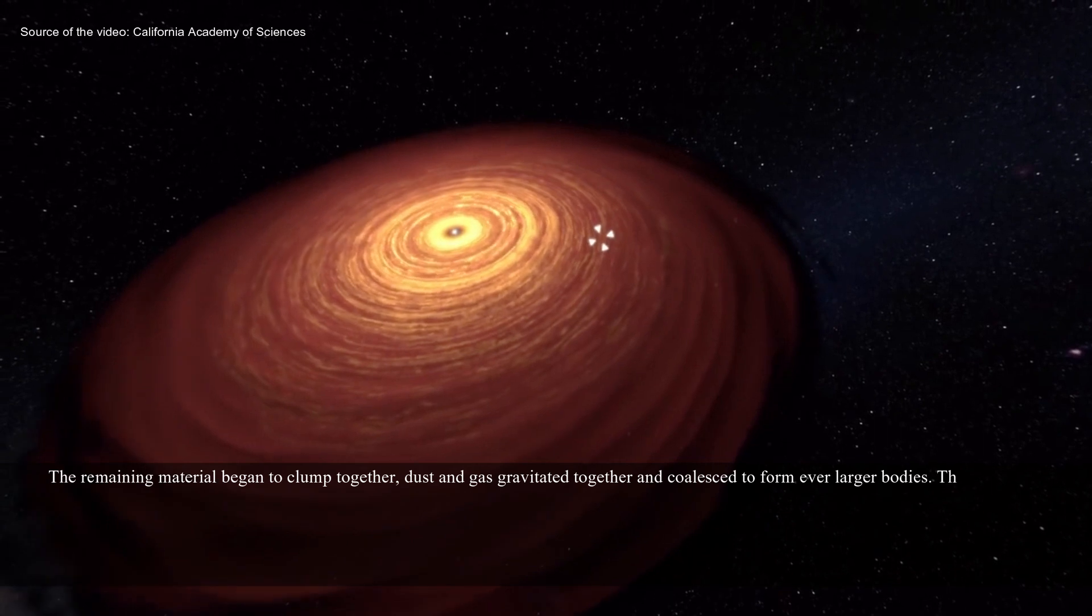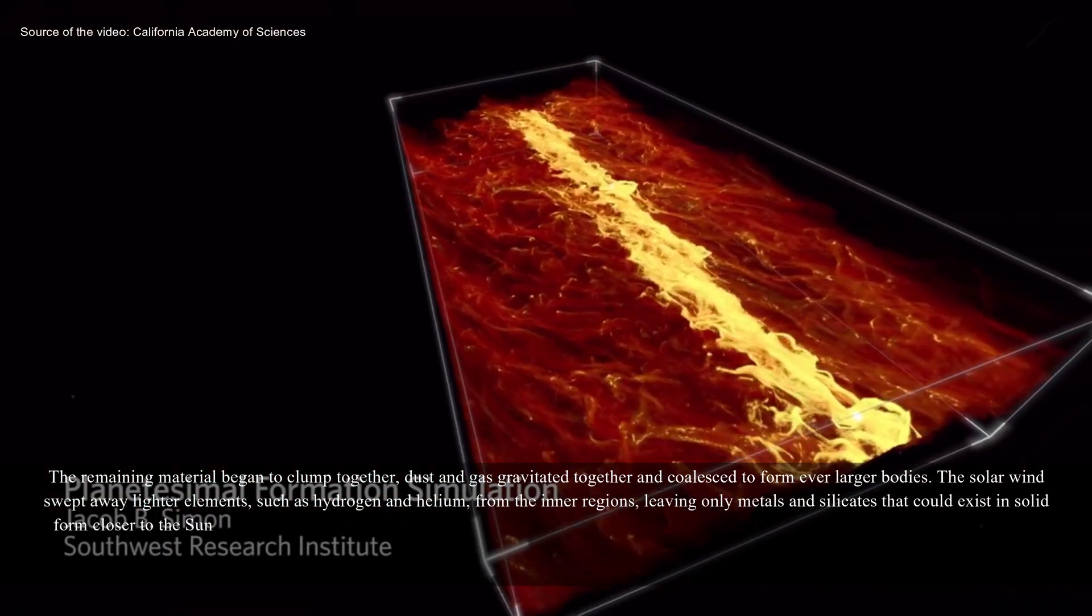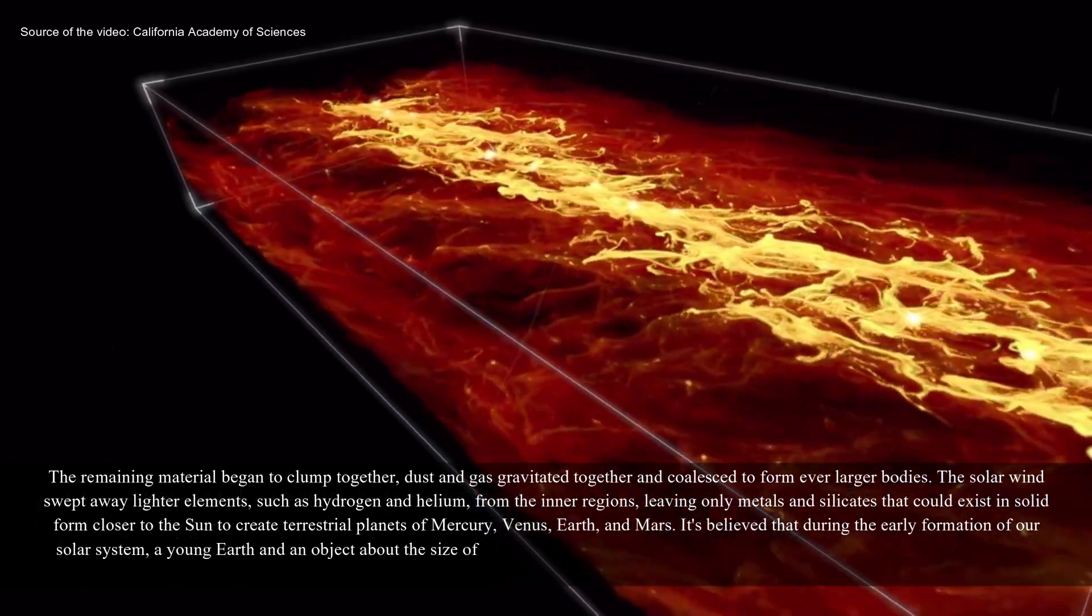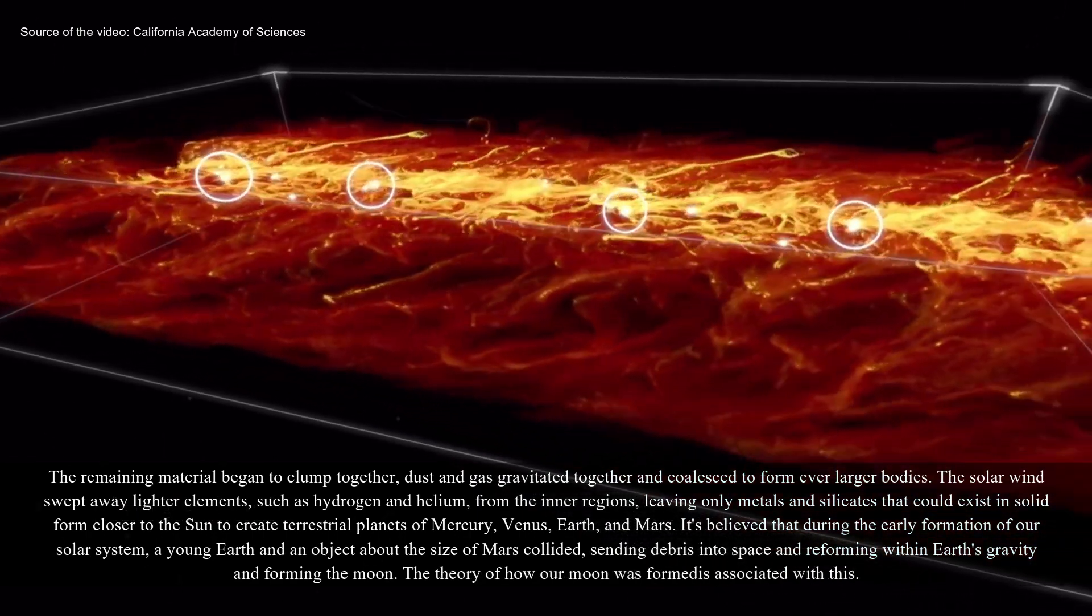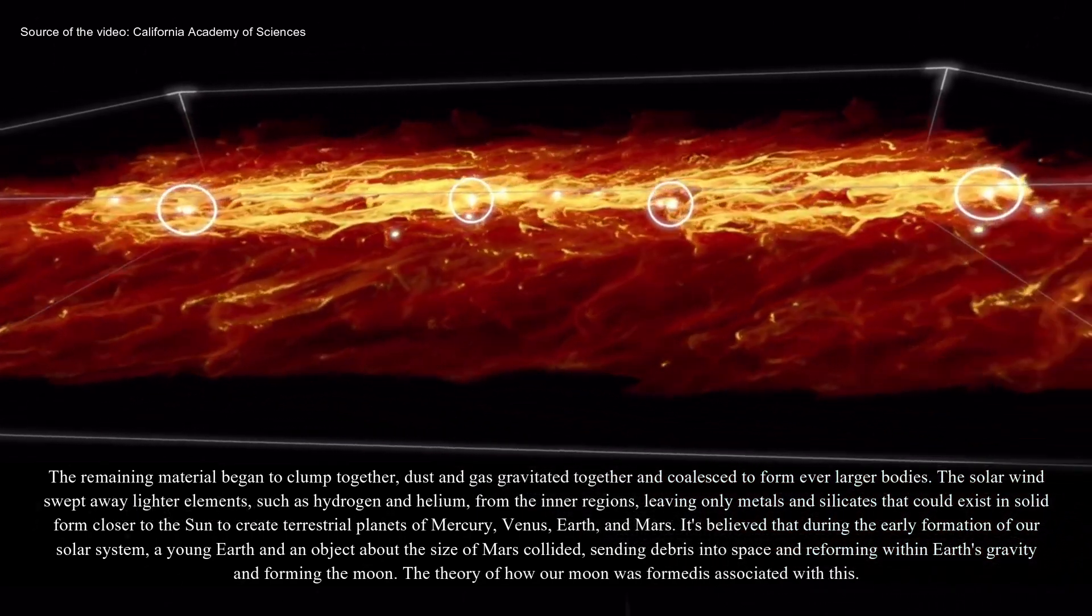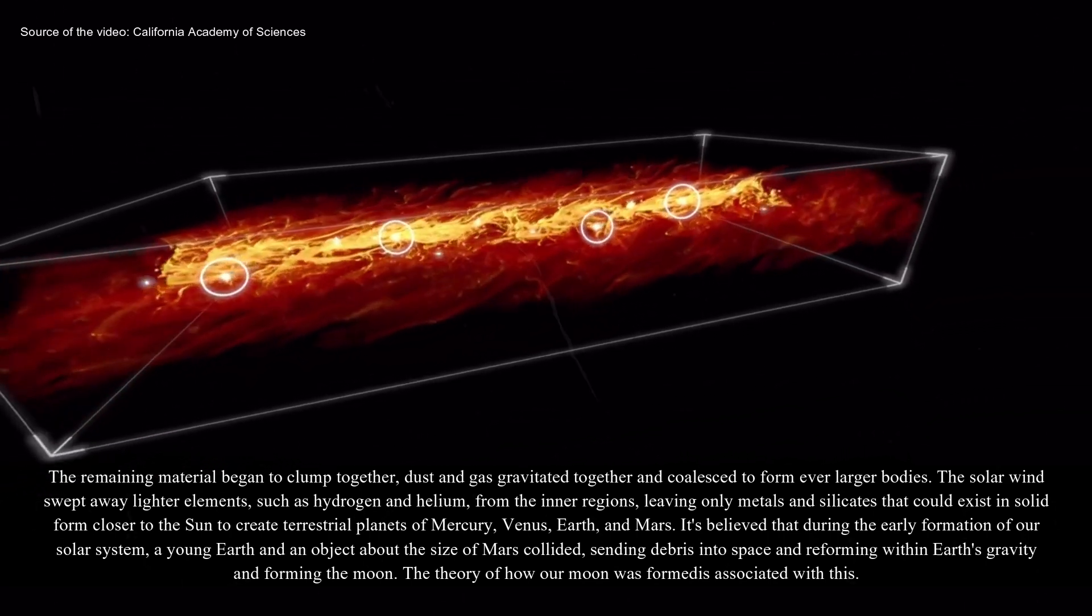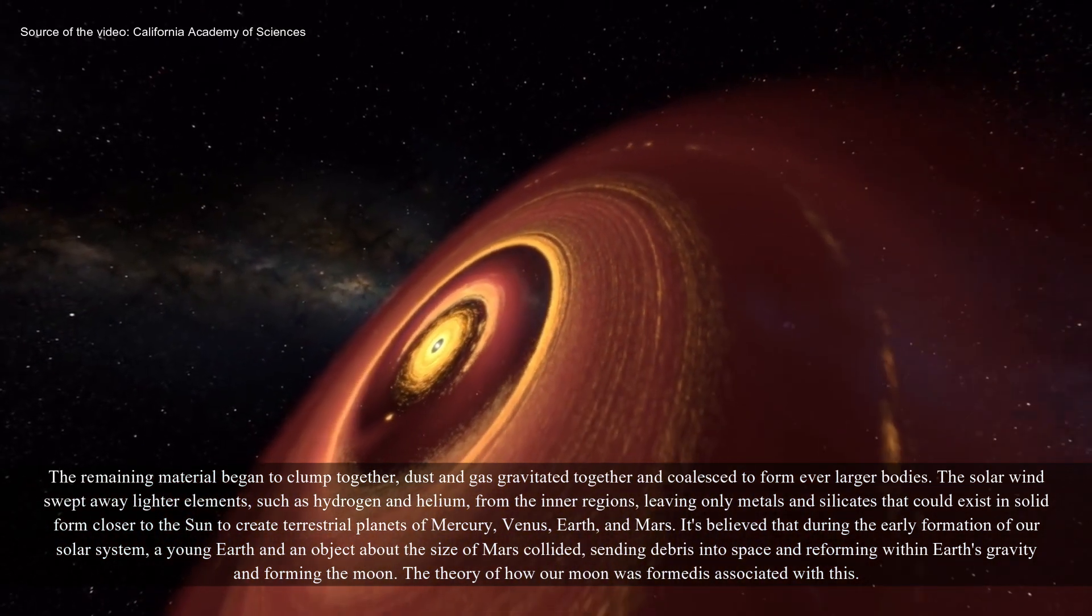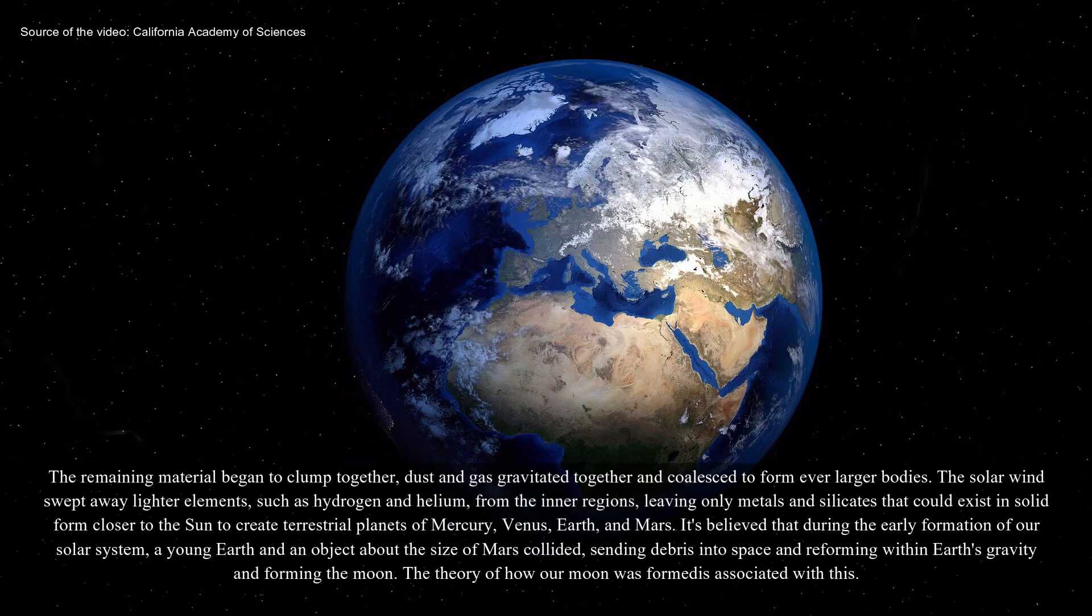The remaining material began to clump together. Dust and gas gravitated together and coalesced to form even larger bodies. The solar winds swept away lighter elements, such as hydrogen and helium, from the inner regions, leaving only metals and silicates that could exist in solid form closer to the sun to create terrestrial planets of Mercury, Venus, Earth, and Mars.